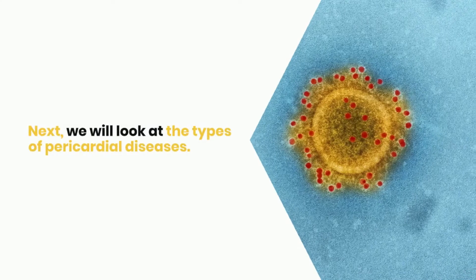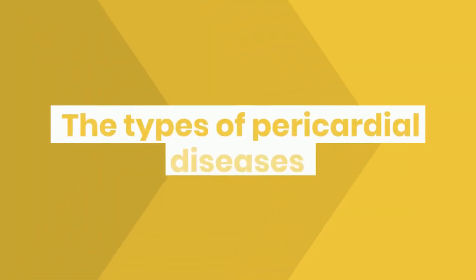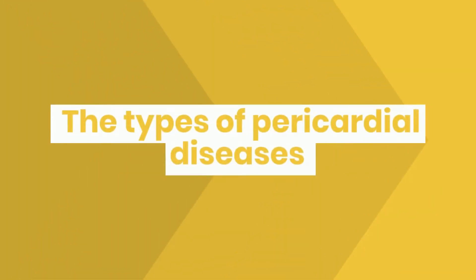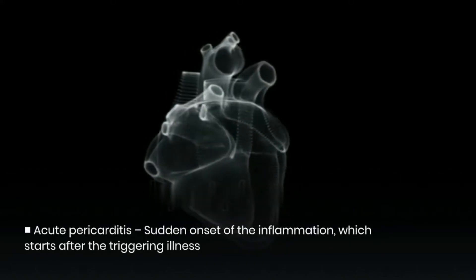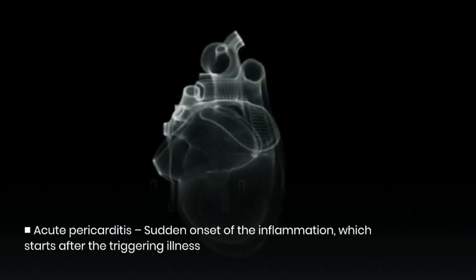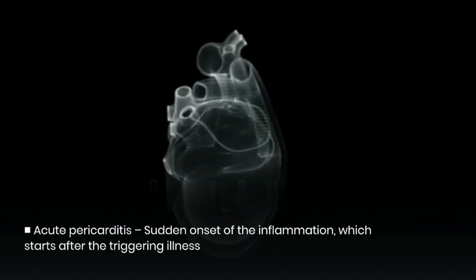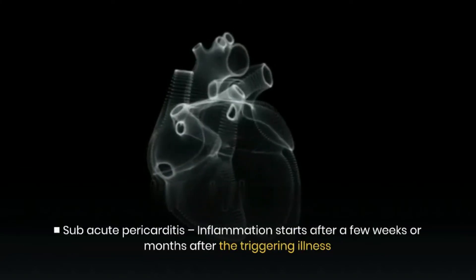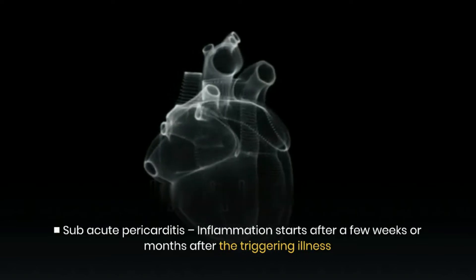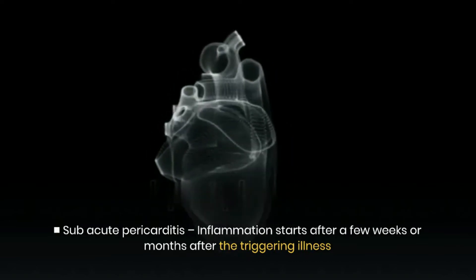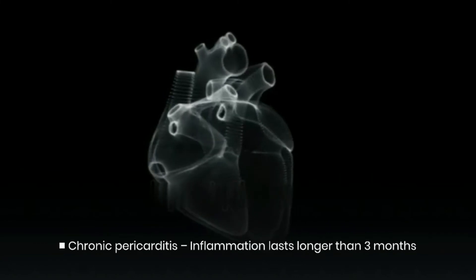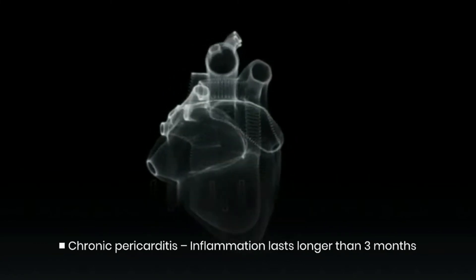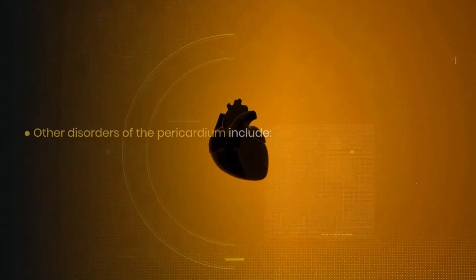Next, we will look at the types of pericardial diseases. The types of pericardial disease are pericarditis, which may be acute pericarditis — a sudden onset of inflammation that starts after the triggering illness — subacute pericarditis, where inflammation starts after a few weeks or months after the triggering illness, and chronic pericarditis, where the inflammation lasts longer than 3 months.